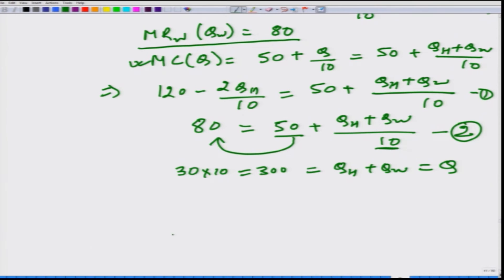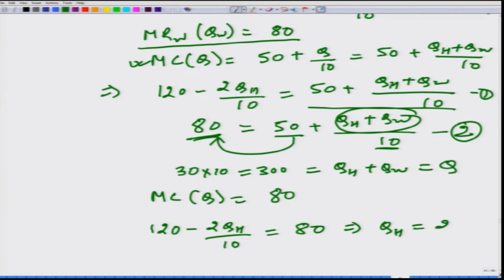At this level of production how much is the marginal cost? We can plug it back the value here or we do not even need to plug it, this we have already calculated when we put Q is equal to 300 we are going to get 80. This RHS is equal to 80 in equation number 1. We can rewrite equation number 1 as 120 minus 2 QH divided by 10 has to be equal to 80. It means that QH has to be equal to 200 and this also gives us the QW has to be equal to 100, because QH plus QW is 300.